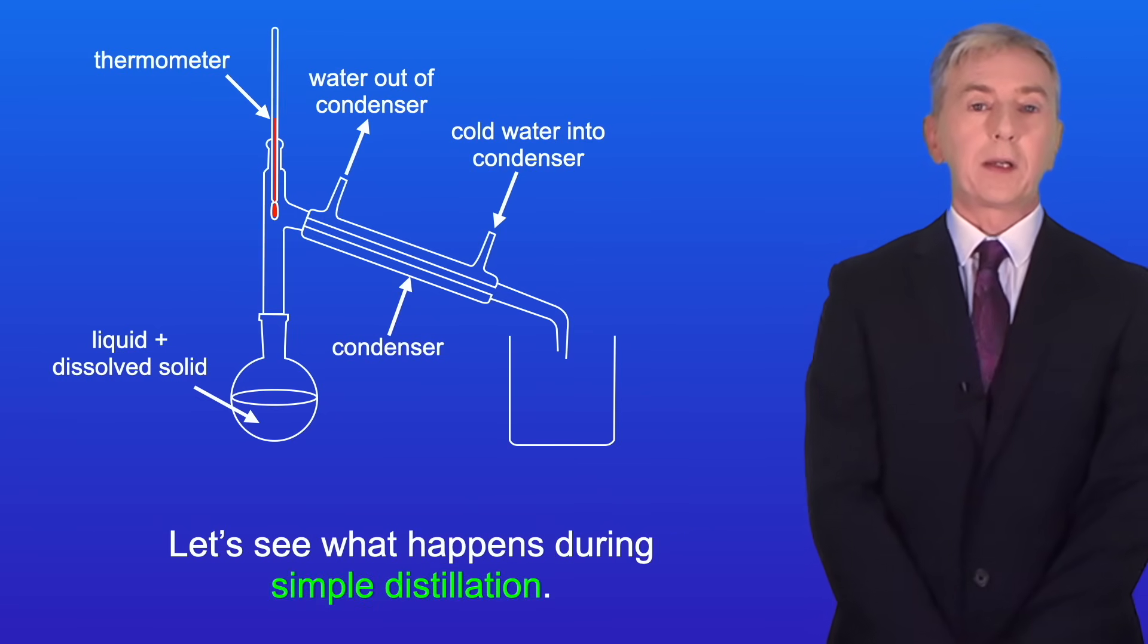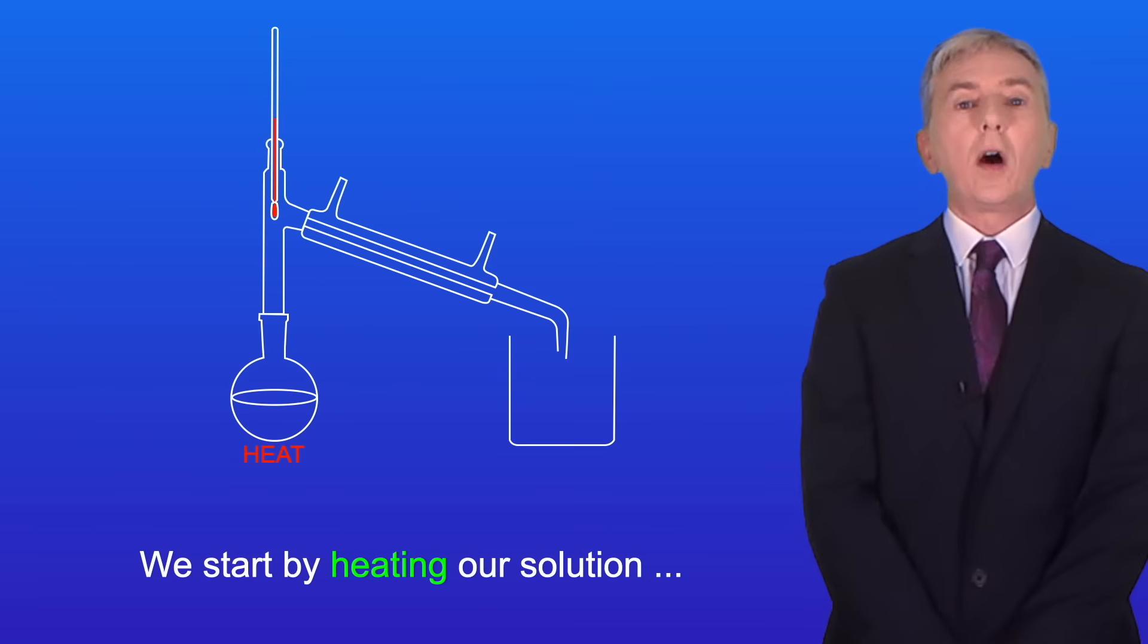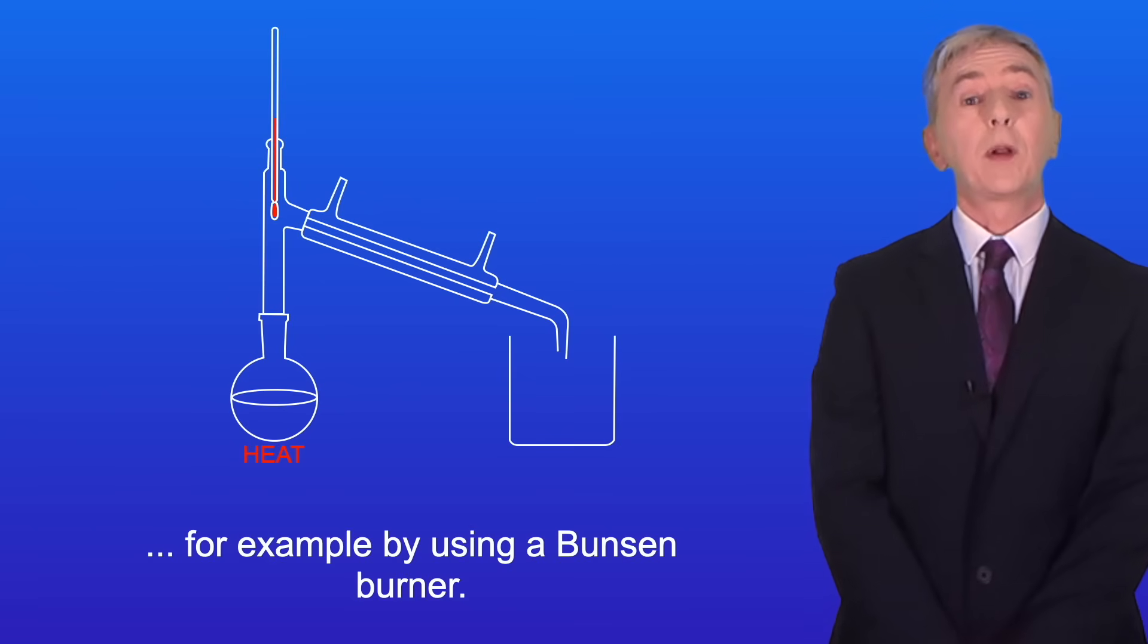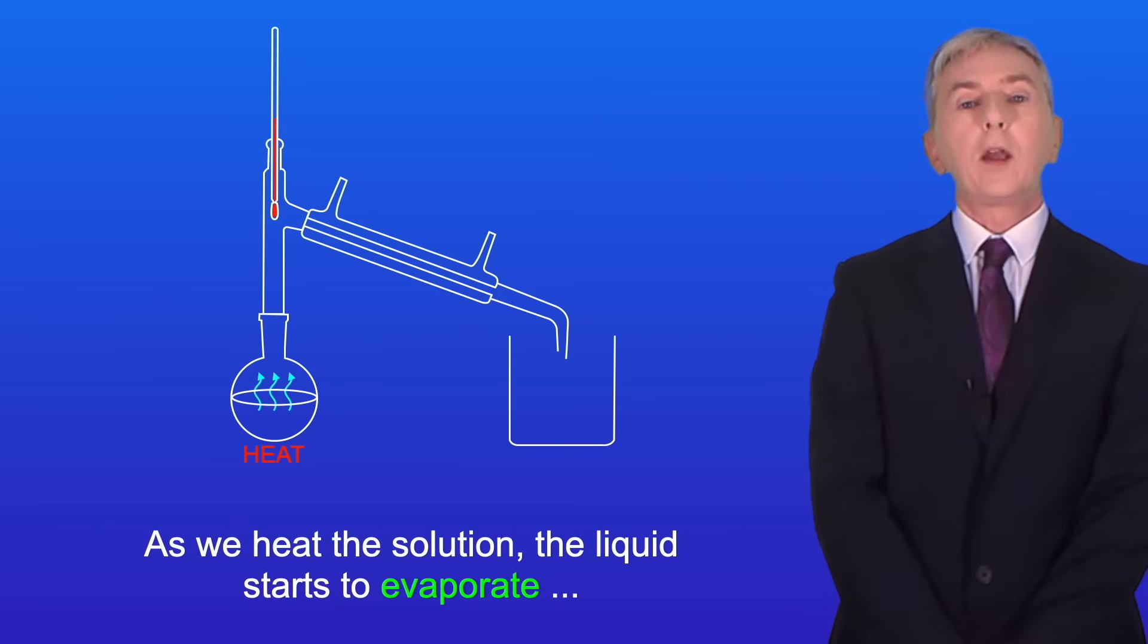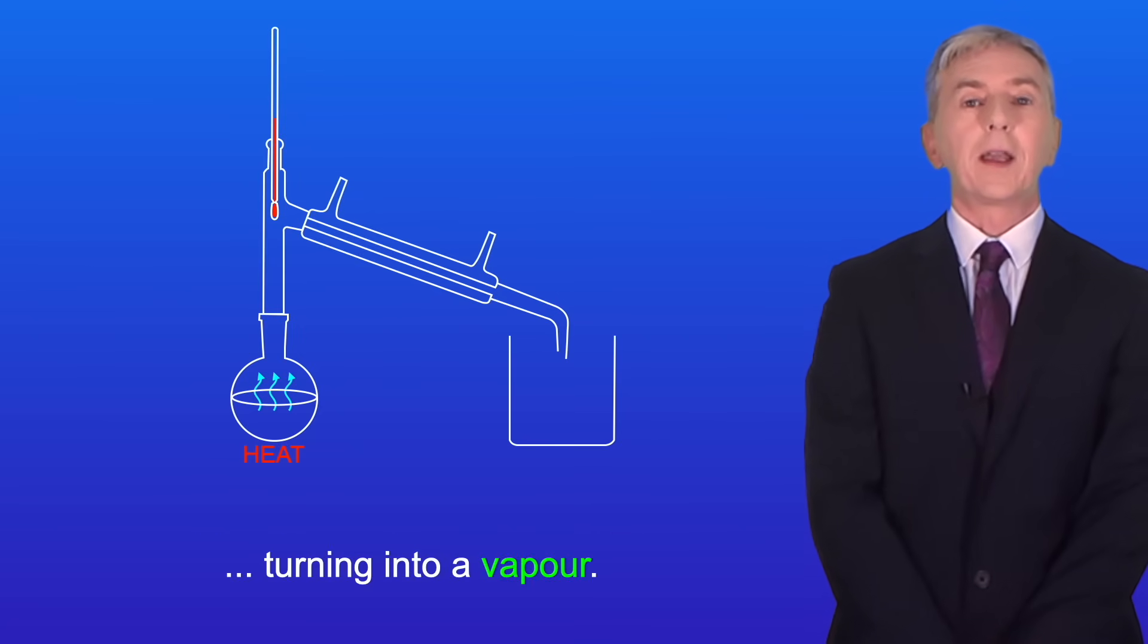So let's see what happens during simple distillation. We start by heating our solution, for example by using a Bunsen burner. As we heat the solution, the liquid starts to evaporate, turning into a vapor.